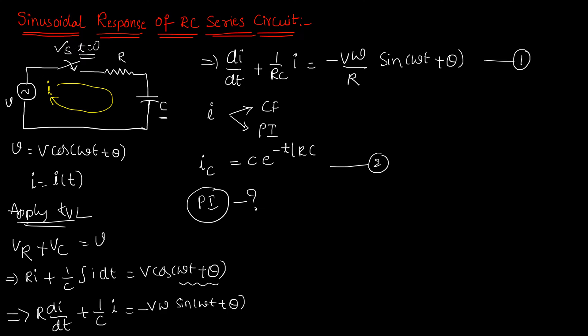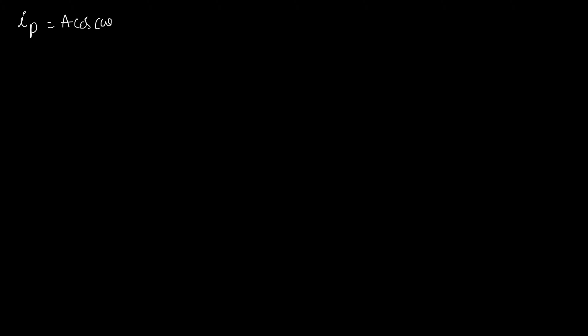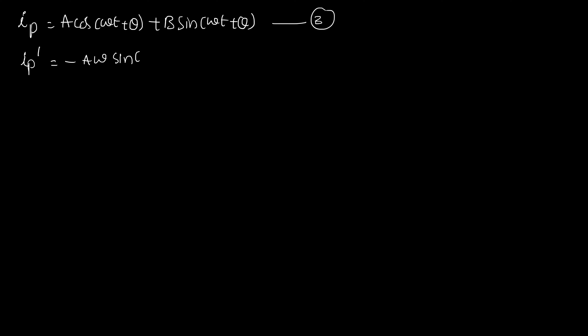Now it is the time to calculate the particular integral. It can be obtained using the method of undetermined coefficients. Let us assume I_P = A cos(ωt + θ) + B sin(ωt + θ) — call this equation 3. Now I need the derivative of I_P, written as I_P'. Applying differentiation gives I_P' = −Aω sin(ωt + θ) + Bω cos(ωt + θ). Call this equation 4.